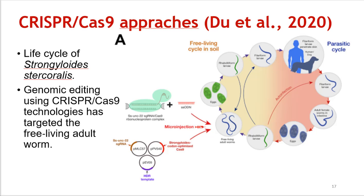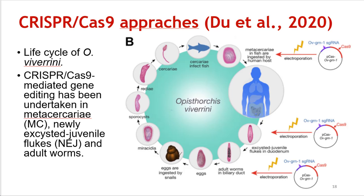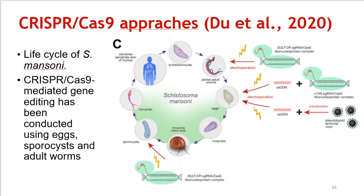CRISPR can be used very efficiently. Du et al. have reported results on numerous helminths. For the life cycle of a roundworm, Estercoris, they have shown that CRISPR technology works best in the free-living adult worm. For others, such as Opisthorchis viverrini, three areas can be targeted: the metacercariae, newly excysted juvenile flukes, and the adult worms — all successfully targeted using CRISPR technologies. In the case of Schistosoma mansoni, we can use CRISPR on eggs, sporocysts, and the adult worm.